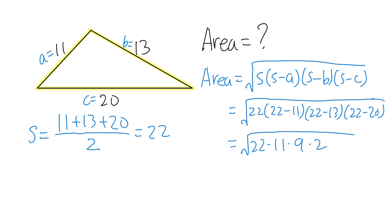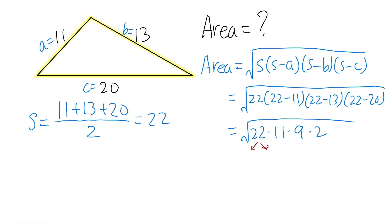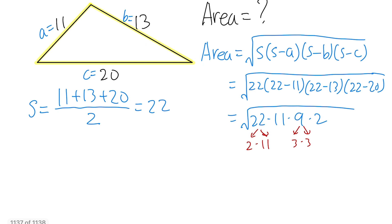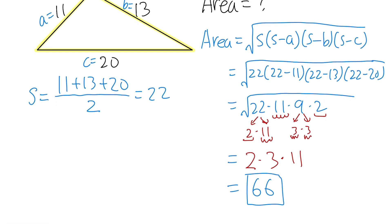We don't need to use a calculator — we can actually break it down. 22 equals 2 times 11, and 9 is 3 times 3. We have two 2s multiplying inside the square root, so that's just a regular 2 on the outside. Similarly, two 3s together give us 3 on the outside. And then we have two 11s, so multiply by 11. All together, we end up with 66 — that's the area of the triangle.